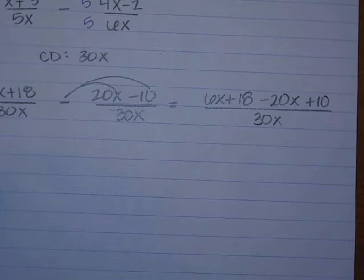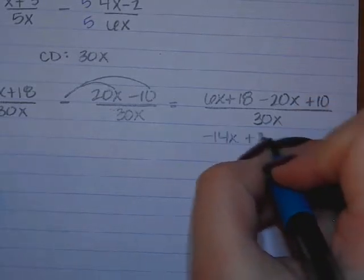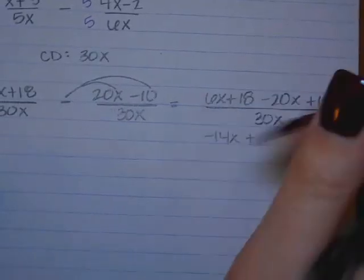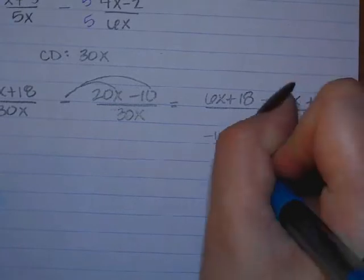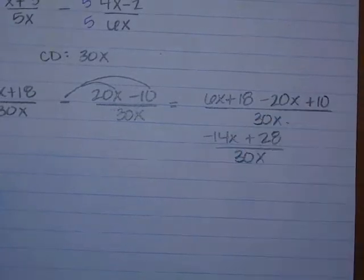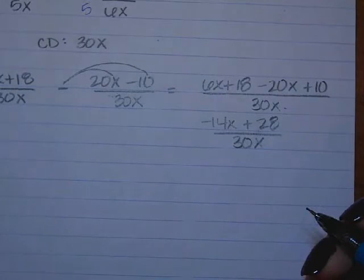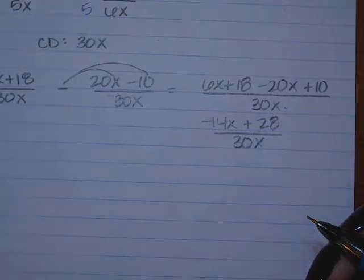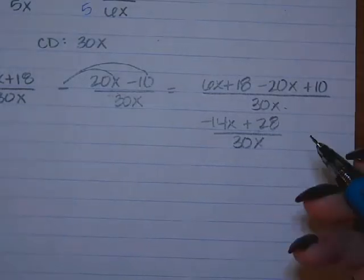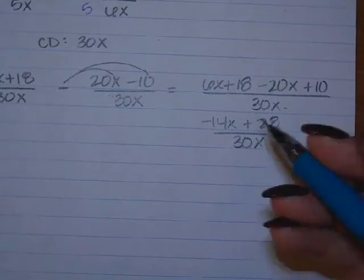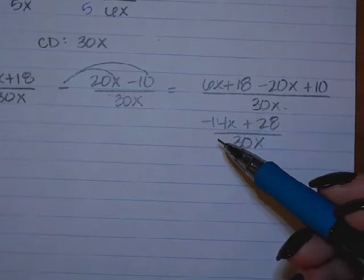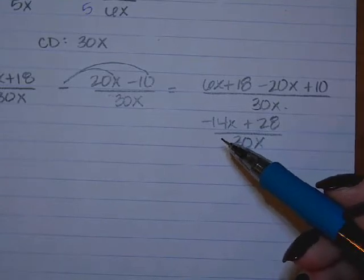So we have negative 14x plus 28 divided by 30x. We need to get the negative out — it's already in decreasing order. The leading term is negative, and this is the step where we're factoring. If the leading term is negative, we've got to take out the negative.